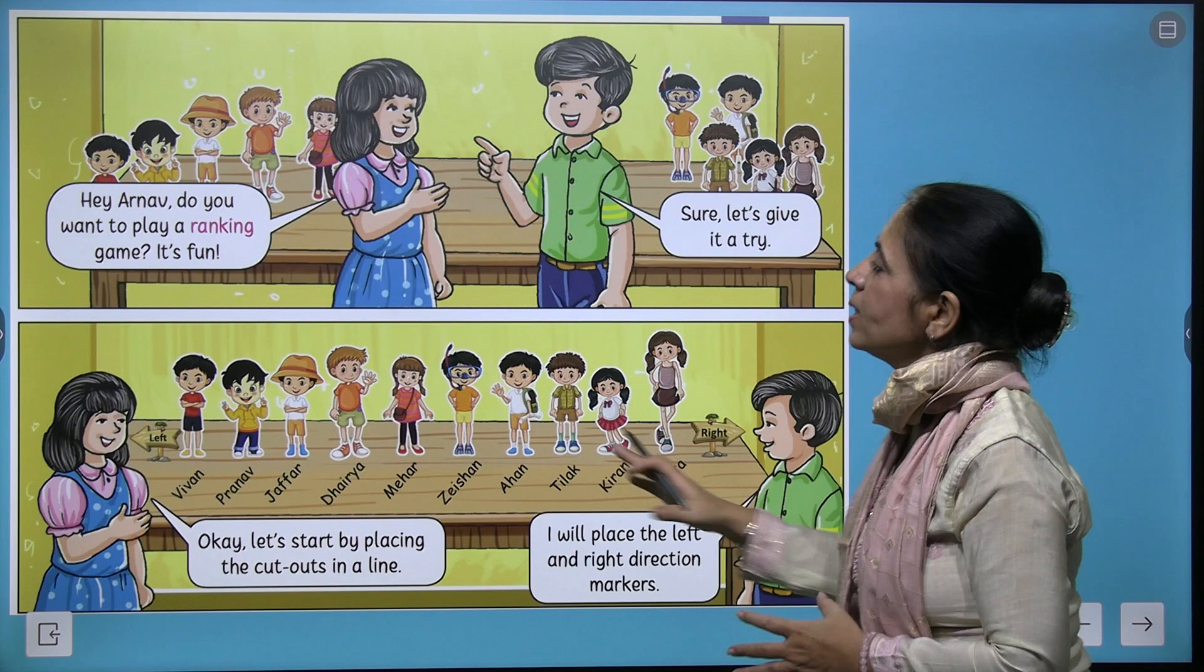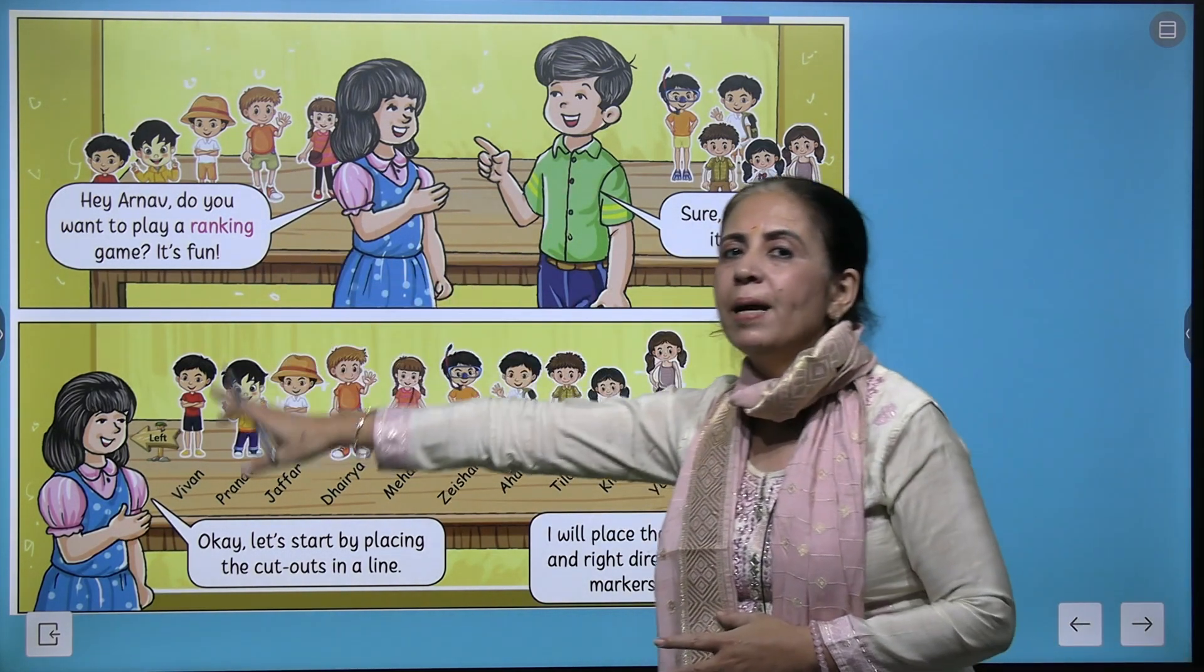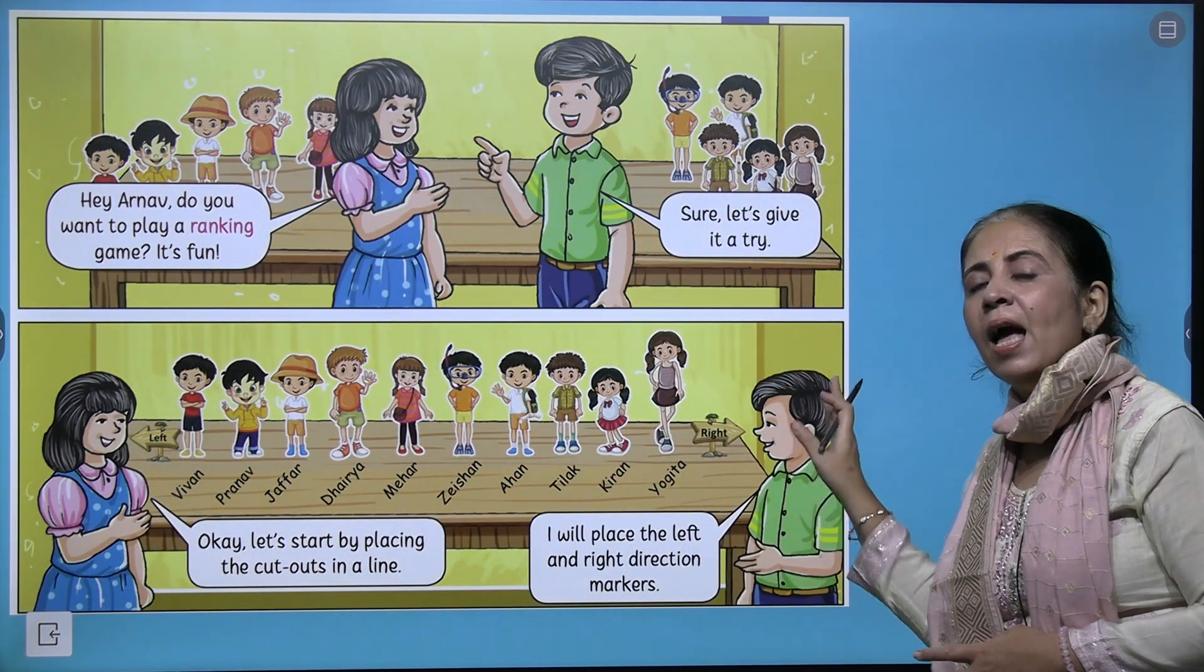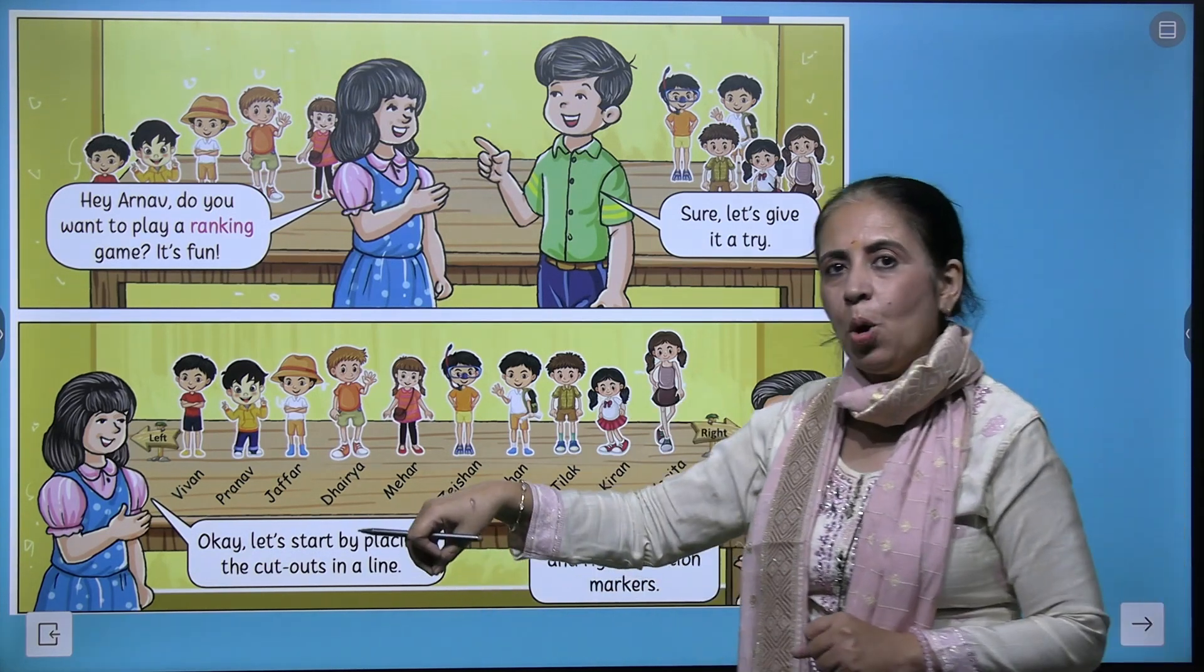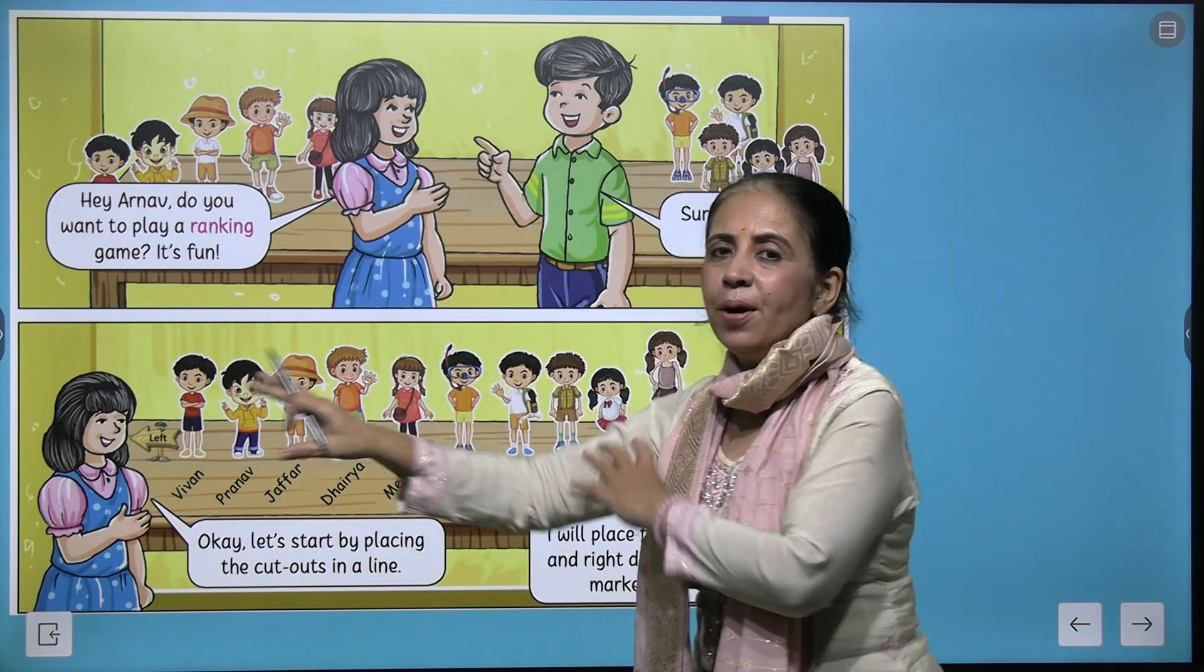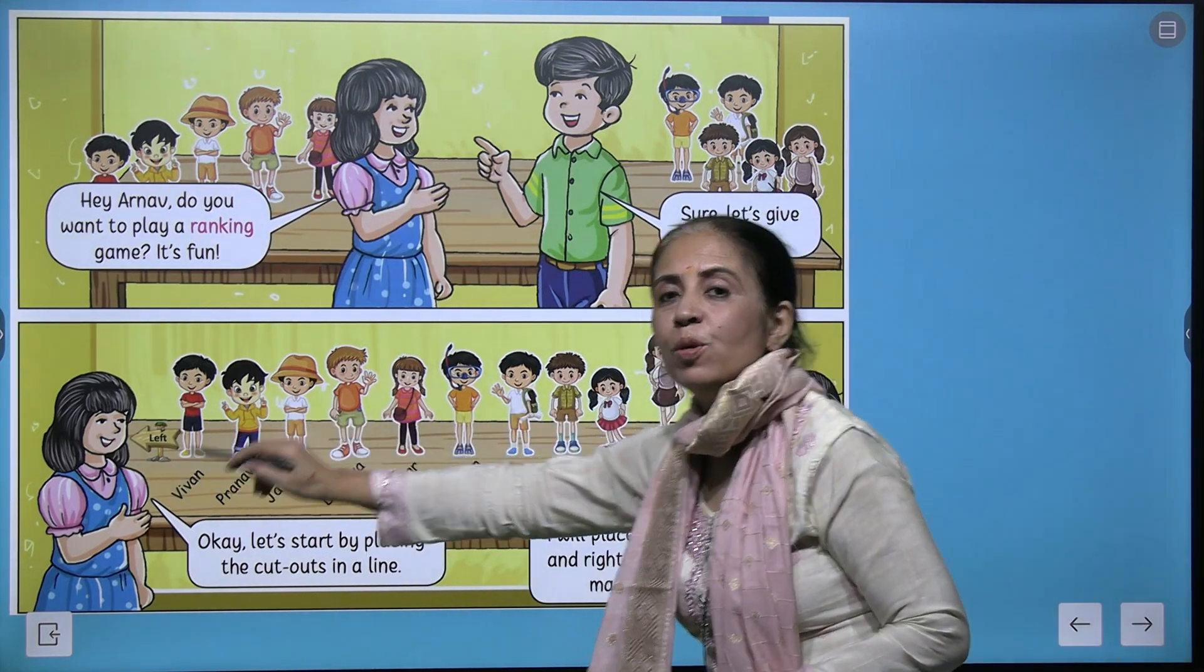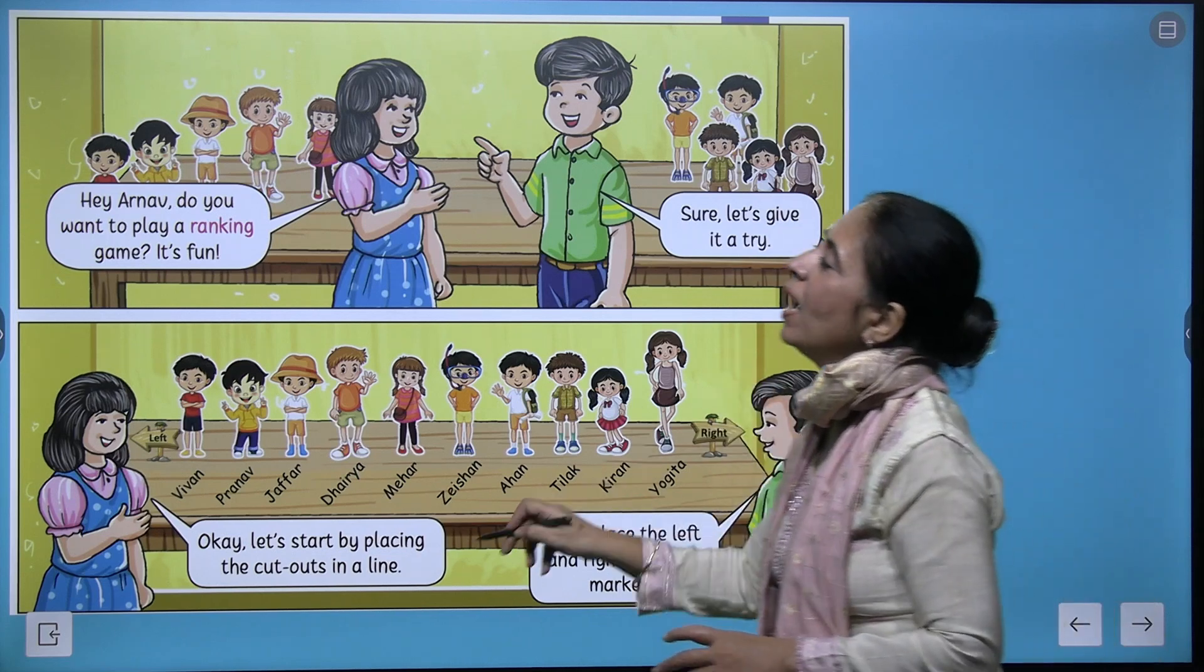When we talk about ranking children, we always come across children standing in a row. Sometimes we start counting from the leftmost side and another time from the right side. Here, Ria and Pranav are playing a ranking game. They have arranged the cutouts in a row, with the leftmost side here and the rightmost side there.